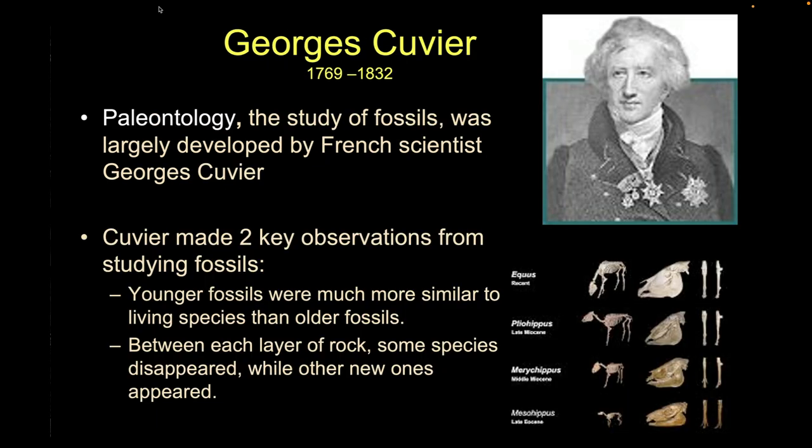Another key thought on diversity comes from paleontologist Cuvier, who makes two key observations in the late 1700s. First, younger fossils are much more similar to things we can see today compared to much older fossils deeper in the ground. Second, looking at stratigraphy, he noticed that in different rock layers you see a lot of organism A, then it stops, and something different shows up.